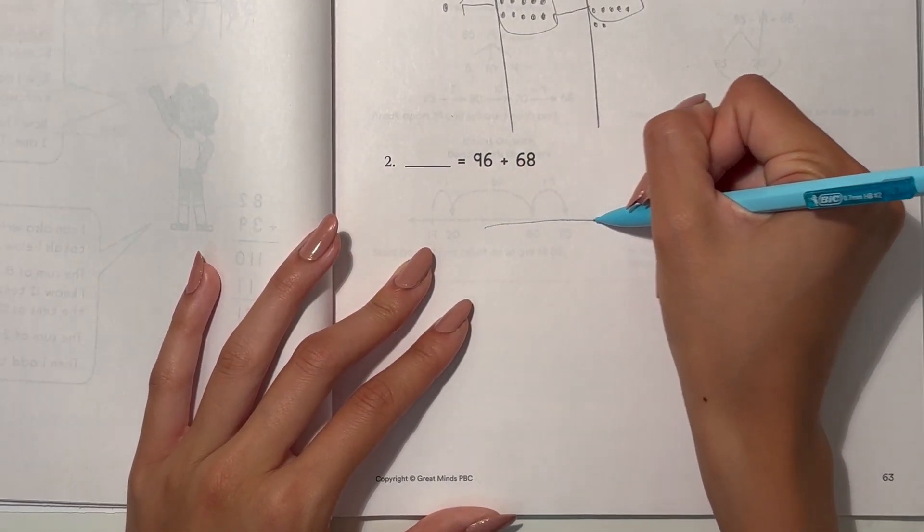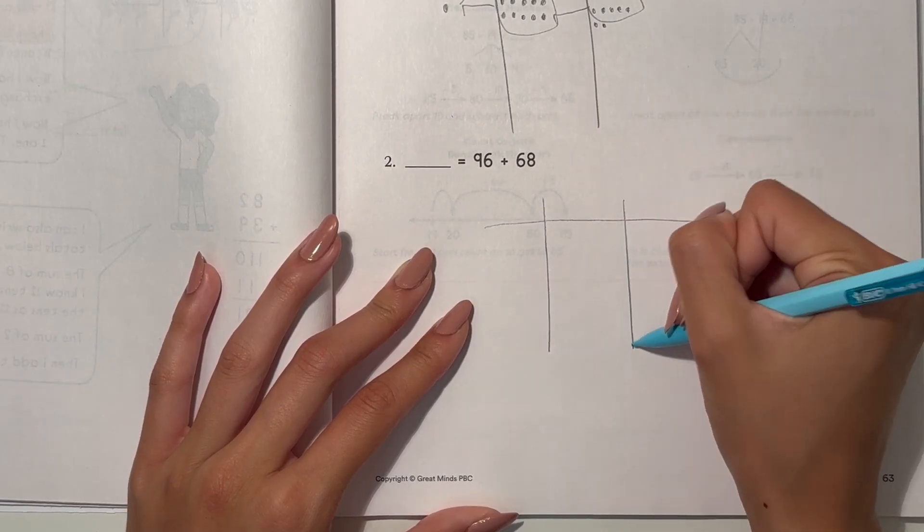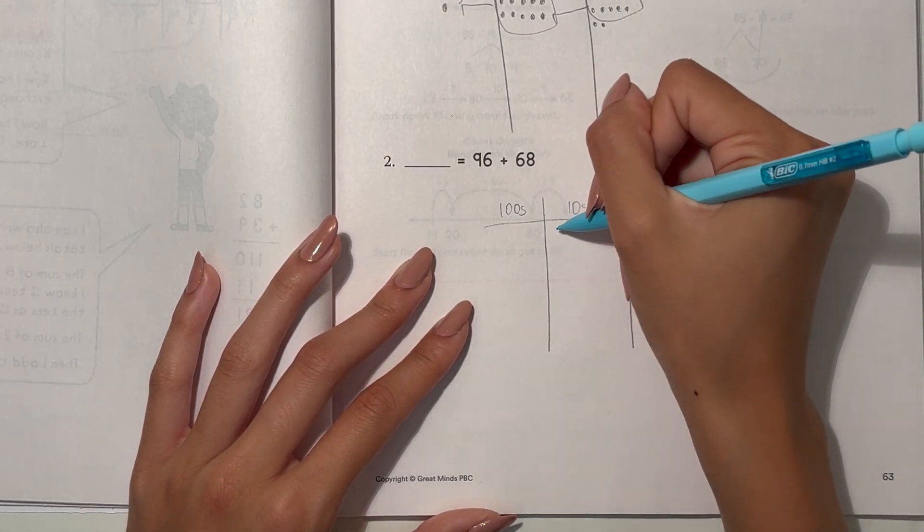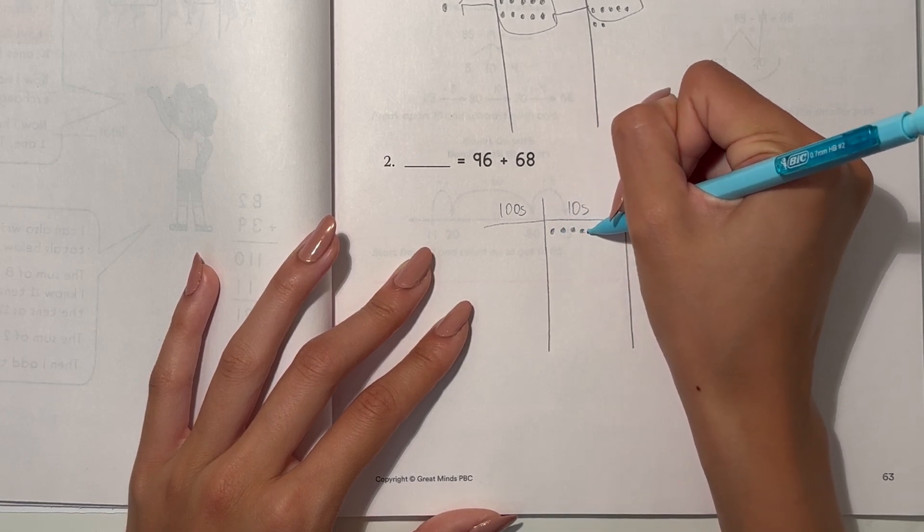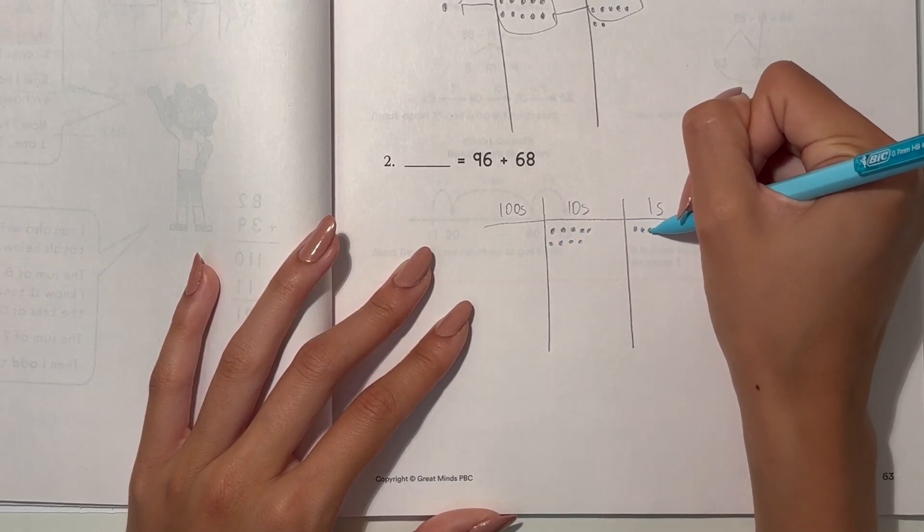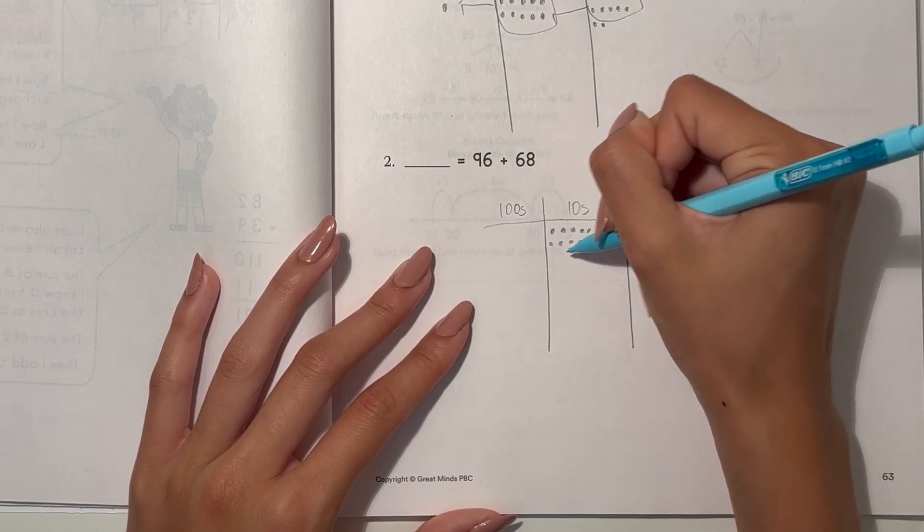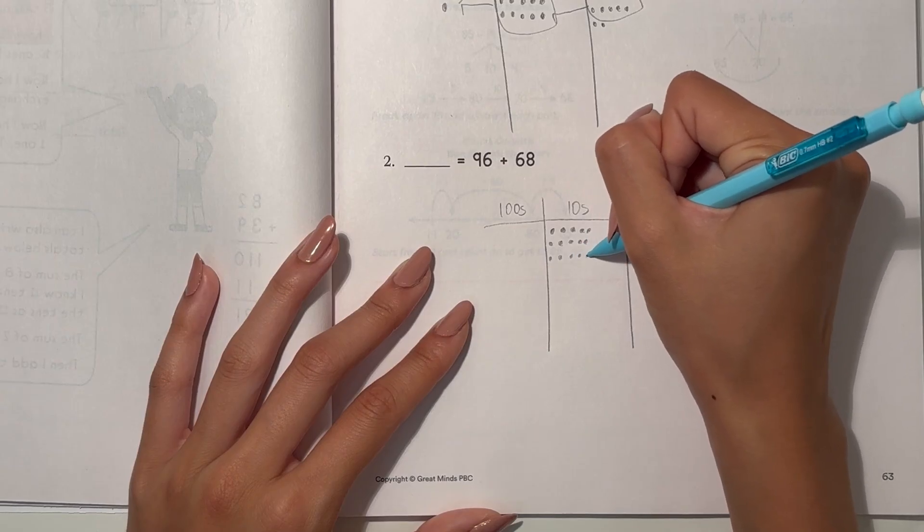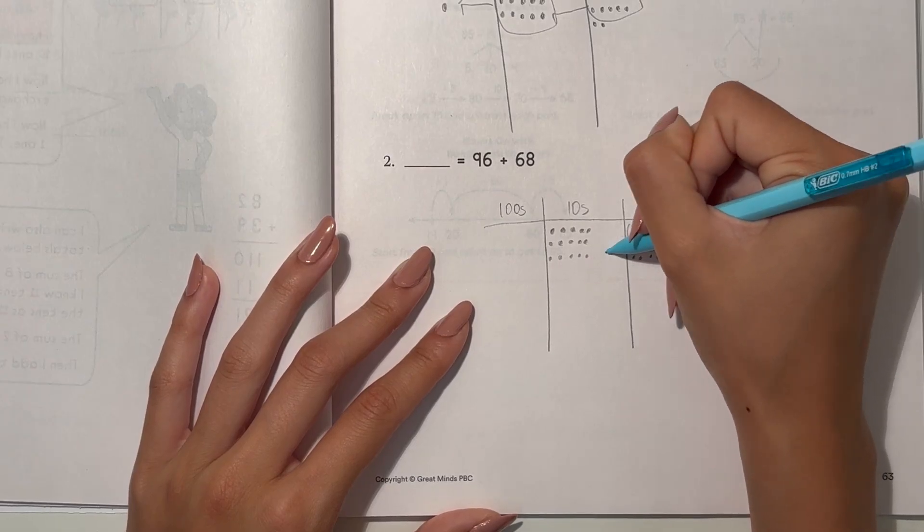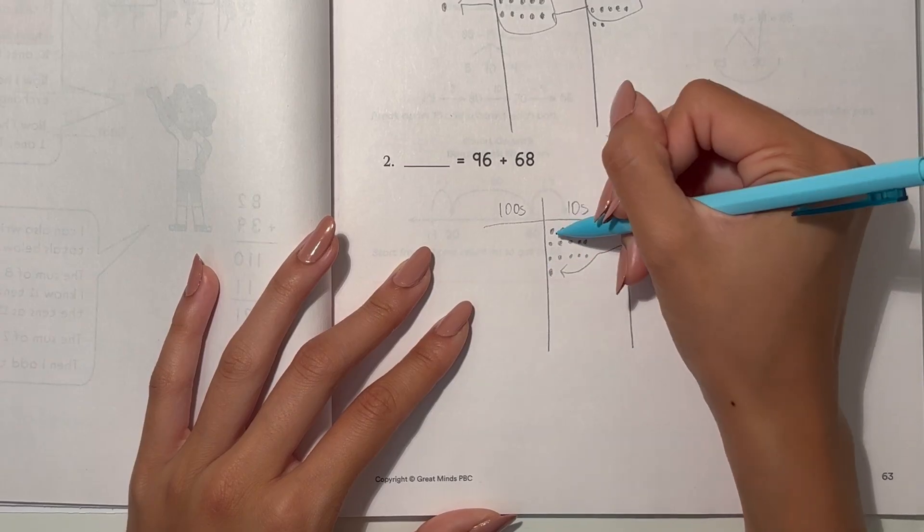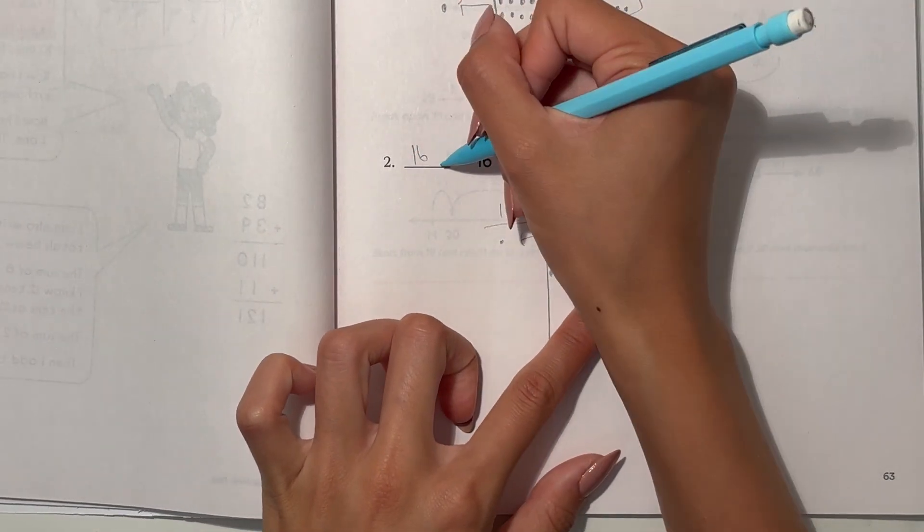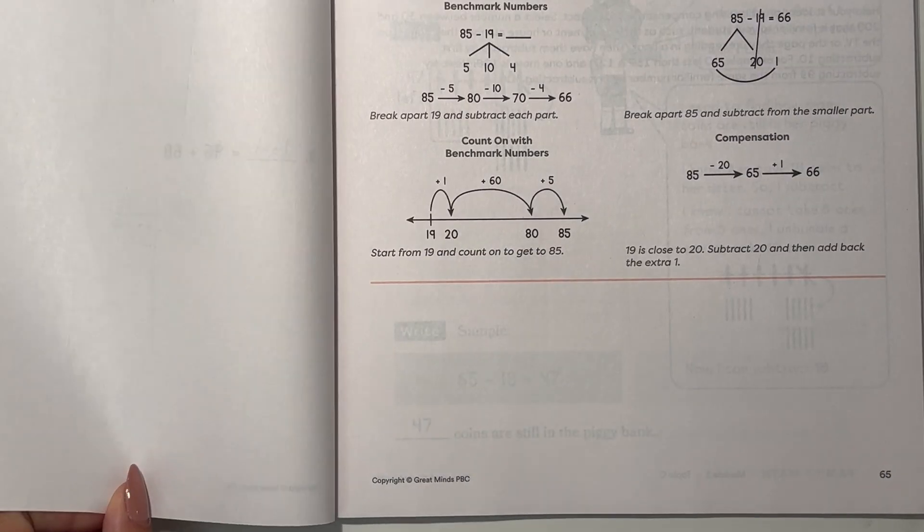And now we have 96 plus 68. Hundreds, tens, and ones. So 96 plus 68. So I'm going to regroup, regroup, regroup. 100, 6 tens, 4 ones, 164. And that's it.